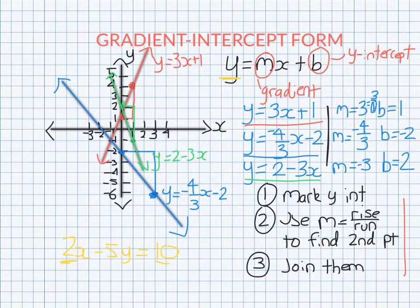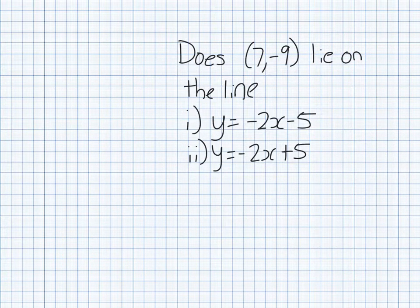So we're just going to look now at deciding whether or not a point is on a line. Please pause and copy this down if you need. The kind of question you might be asked here, you'd be given a point like 7 minus 9 and ask, does it lie on some lines? So in this case, we're going to decide whether it lies on y equals minus 2x minus 5 and y equals minus 2x plus 5.